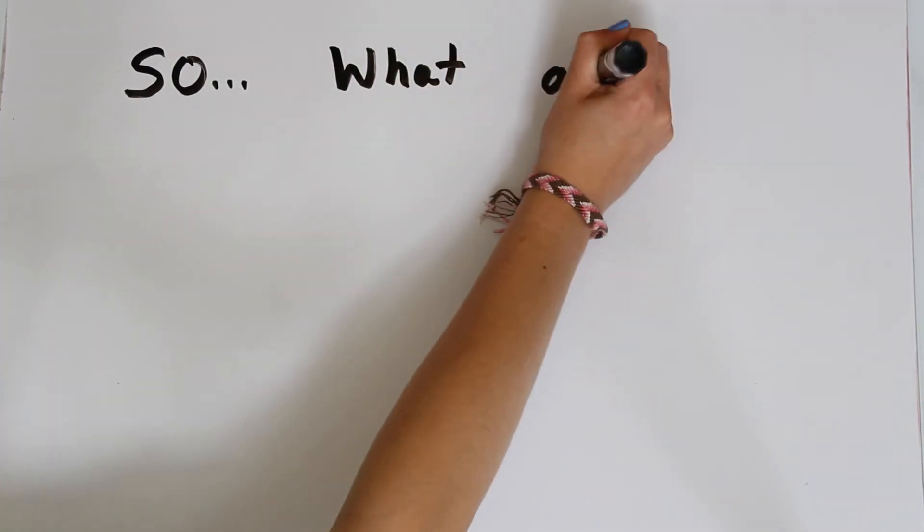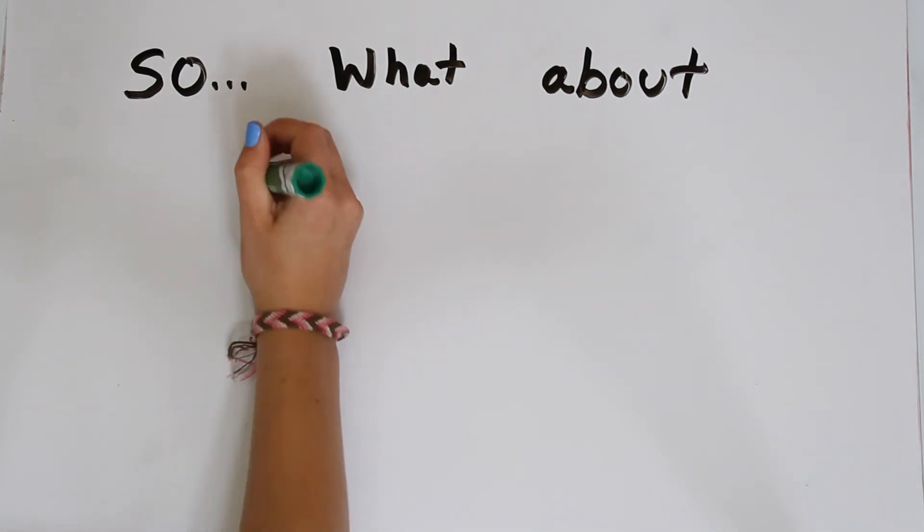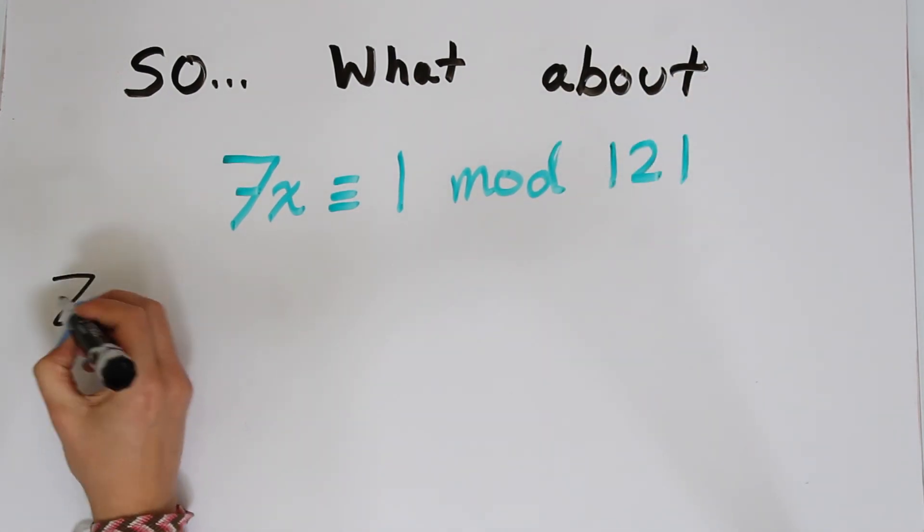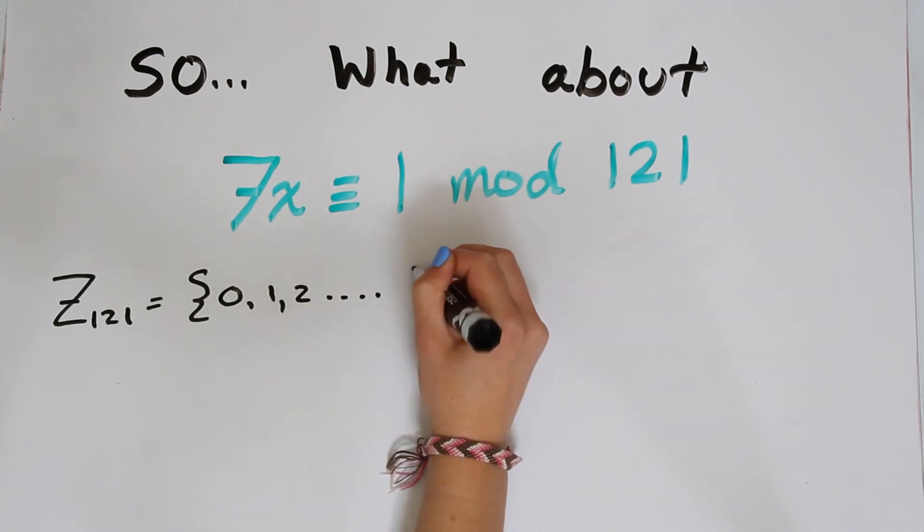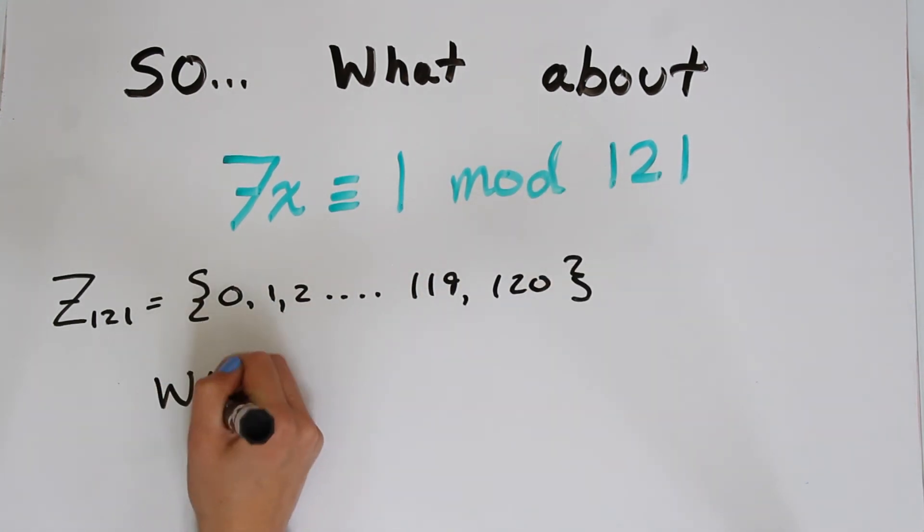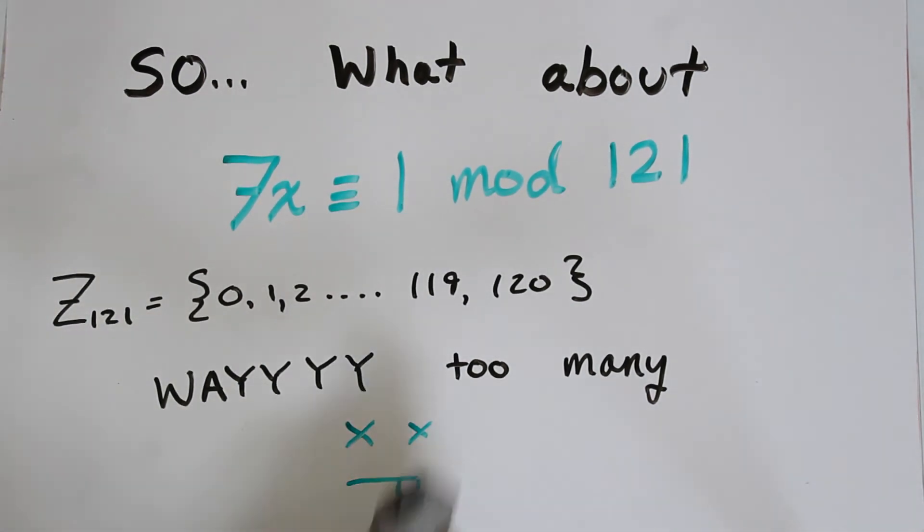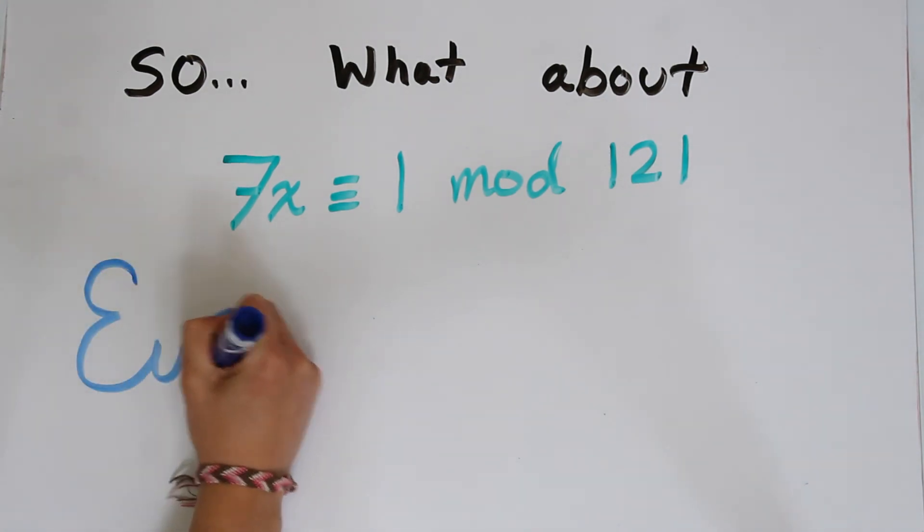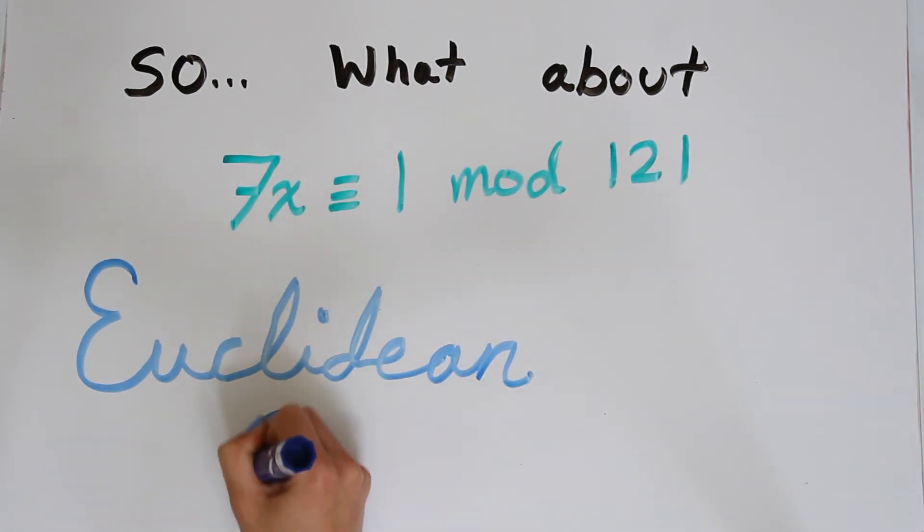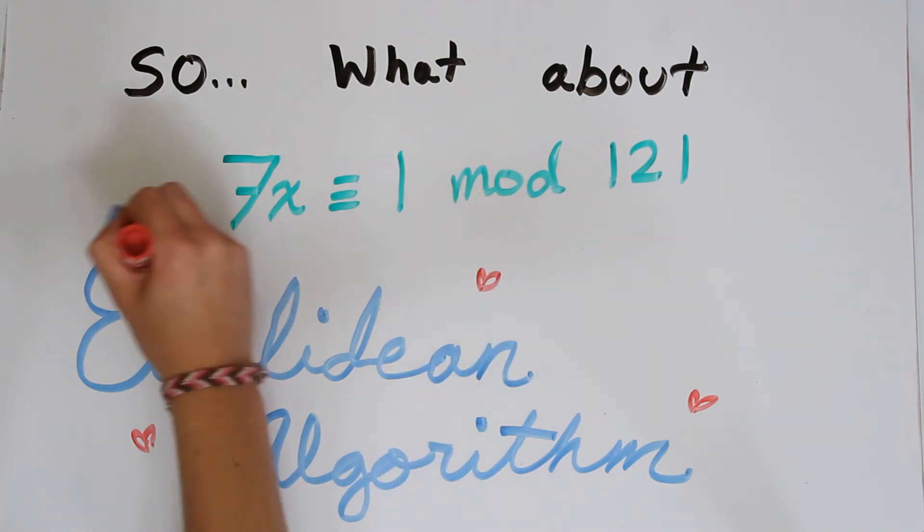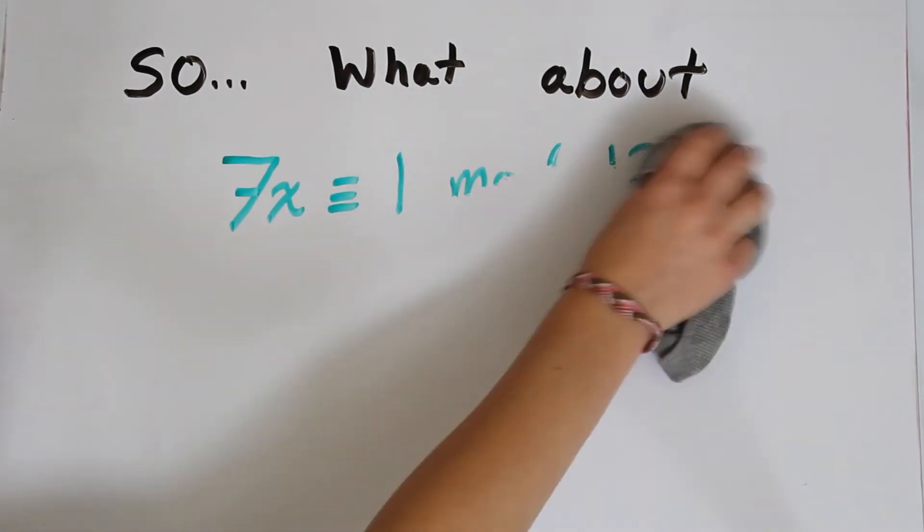So you may be thinking to yourself, well, we're not always going to have nice small numbers. So how do we find an inverse if we can't test all of the possible remainders? Well, you're completely right. If we had something like 7x is congruent to 1 mod 121, there are literally 121 possible options for x. So that's way too many to test. Well, there is a method for solving congruences like this, and it's called the Euclidean algorithm. You may have heard the name before, you may have no idea what it actually is. Well, it's a really cool method for solving congruences like this, and we're going to go over it next time. So you all can look forward to that.